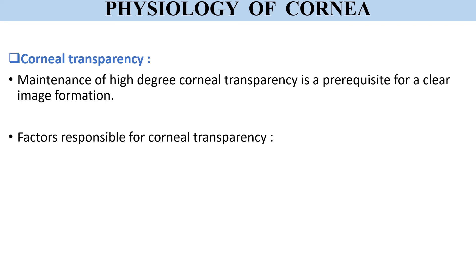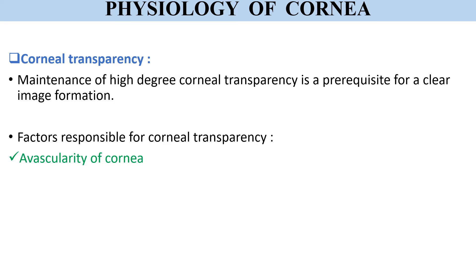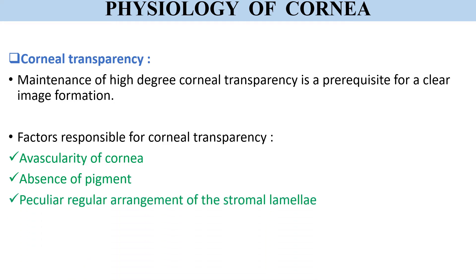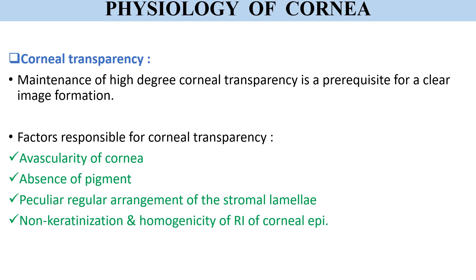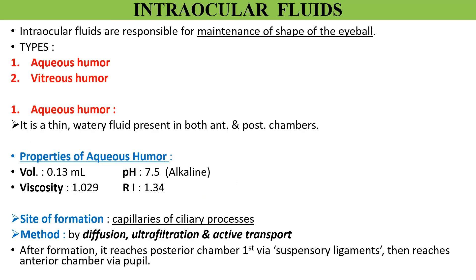The main physiological function of the cornea is to act as a major refracting medium so that a clear retinal image is formed. For this, maintenance of corneal transparency to a high degree is of utmost importance. Factors responsible for corneal transparency are: avascularity of the cornea, a peculiar regular arrangement of the stromal laminae, absence of pigment, non-keratinization, homogeneity of the refractive index of the corneal epithelium, and relative dehydration of the stroma.